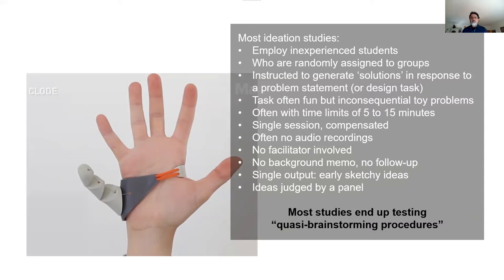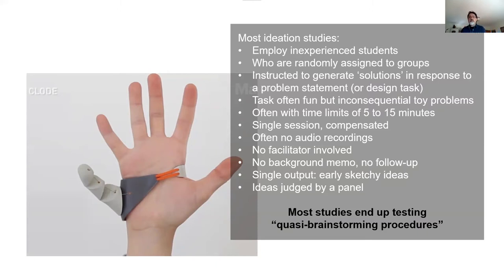When the rate of ideation slows down, studies often focus only on a single session, whereas Osborne talked about what he called the 'triple attack' — having individual brainstorming followed by group brainstorming and then again by individual brainstorming. Participants in these studies are usually compensated, and sessions are often lacking audio recordings, whereas Osborne talked about the importance of registering and taking notes of the ideas, including audio recordings.